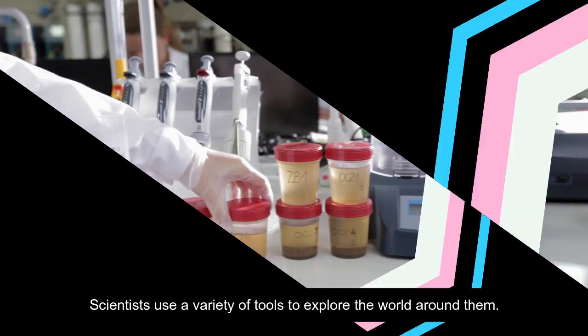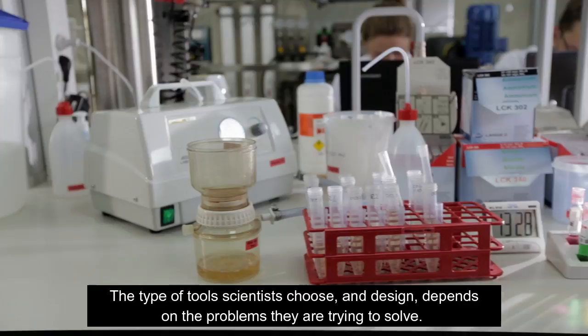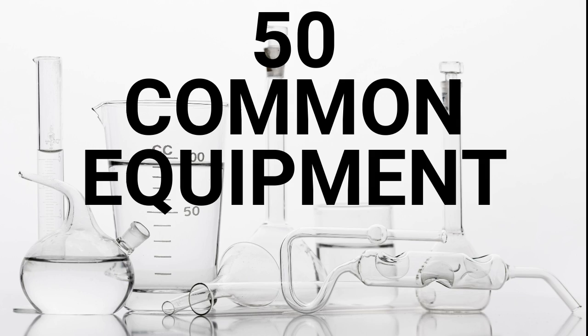Scientists use a variety of tools to explore the world around them. Tools are very important in the advancement of science. The type of tool scientists choose and design depends on the problems they are trying to solve. This video looks at 50 common equipment used in science labs. They have been ordered alphabetically.